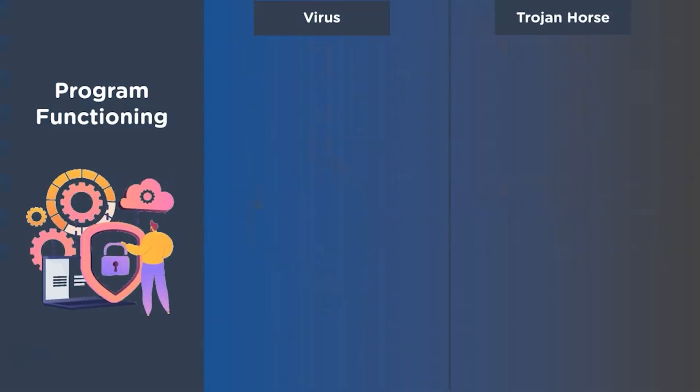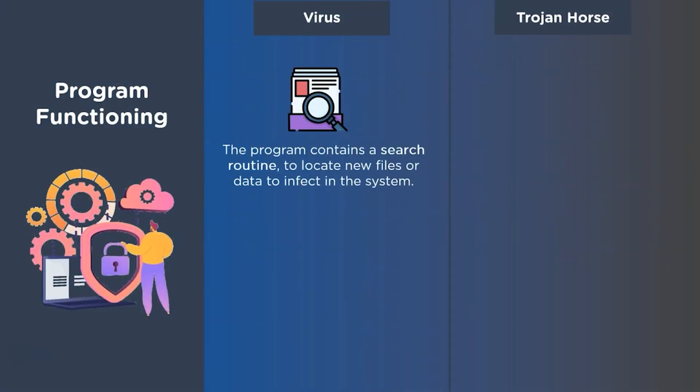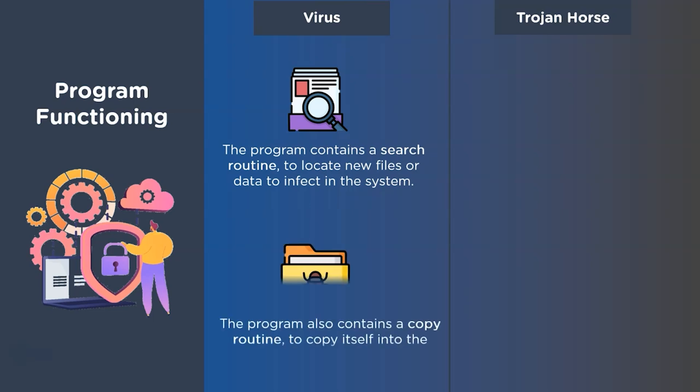Let's look at how viruses function after getting installed into a system. A computer virus must contain two parts to infect the system. First is a search routine, which locates new files and data to be infected. The second part is the copy routine, which copies the virus into the targeted file located by the search routine.